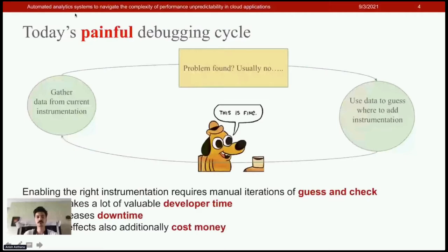Currently, enabling the right instrumentation requires manual iterations of test and check. You gather more data from instrumentation, try to localize a problem, and if it's not enough, you instrument more and gather more data. This takes a lot of valuable developer time, increases downtime for your application, and comes with additional cost.